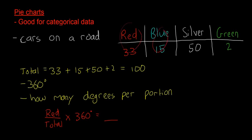We do that for red, we do for blue, silver, and green. And then we can find out how many degrees are in each portion of the pie, and then we can draw that on it to make a pie chart.